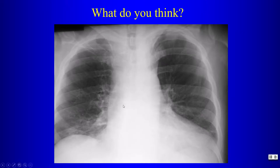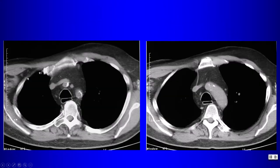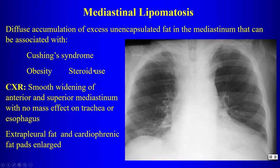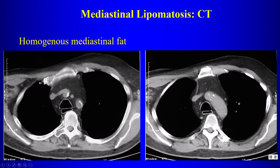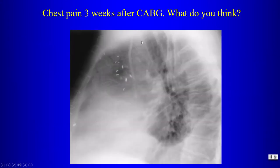Turning to diffuse mediastinal abnormalities: smooth widening of the mediastinum without lumpiness, bumpiness, or mass effect represents mediastinal lipomatosis. Associated with Cushing's syndrome, obesity, and steroid use. No mass effect on the trachea or esophagus; enlarged cardiophrenic angle fat pads may also be seen. CT shows homogeneous mediastinal fat causing the smooth widening — an easy CT diagnosis.